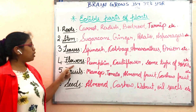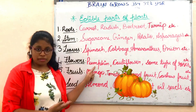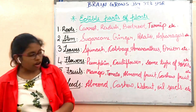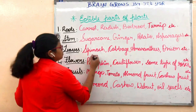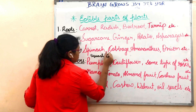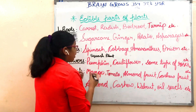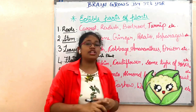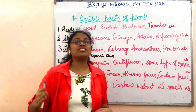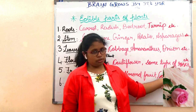We eat flowers of pumpkin — the pumpkin is actually the flower of the squash plant. Then cauliflower: cauliflower is a cool season crop which belongs to the cabbage family. Some types of roses are also edible.